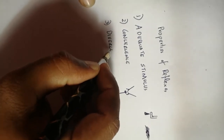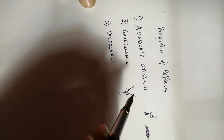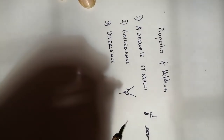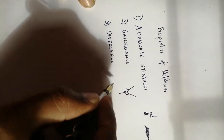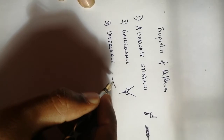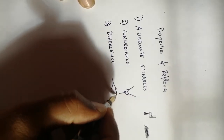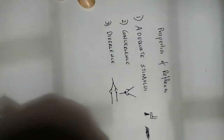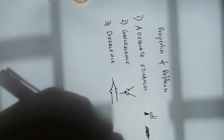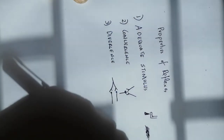Another concept is divergence. Divergence is when one neuron branches and supplies two different neurons, so there are many projections from a single neuron.